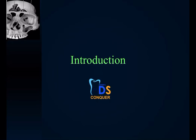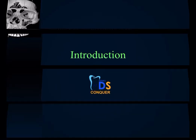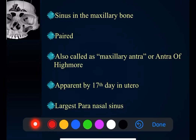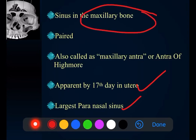This is how you have to write the contents. Starting the introduction: it is also called as the maxillary antrum or antrum of Highmore, and it becomes apparent by the 17th day in utero or intrauterine life. It is a paired sinus, the largest paranasal sinus, and it is present within the maxillary bone.